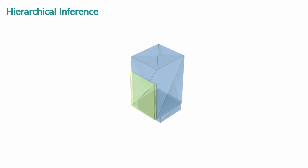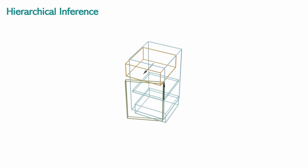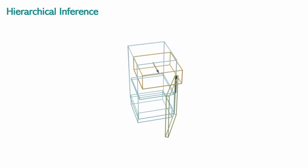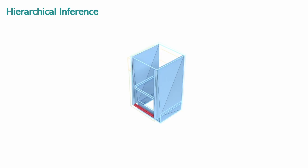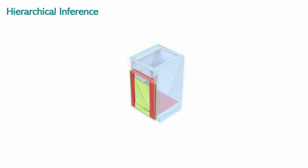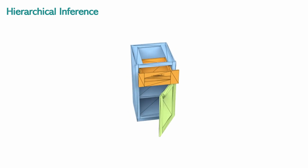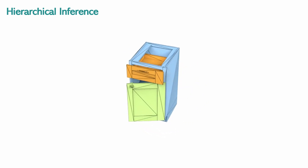At inference time, we first sample the structure transformer unconditionally to generate an object structure sequence. The structure decoder then decodes this into part-bounding boxes with their associated articulation properties. For each part, the mesh triangle sequence is generated by sampling the geometry transformer, conditioned on the structure and previously generated junction faces. This is then decoded into mesh triangles by the geometry decoder.